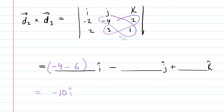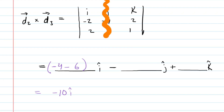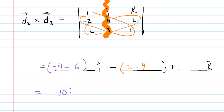For the next component, the j hat direction, we cover up the middle column, leaving another two-by-two determinant. Cross multiplying: negative two times one is negative two, and two times positive two is four. Subtracting those gives negative six, but don't forget the extra minus sign built in — so we're subtracting negative six, which means we end up adding six j hat.